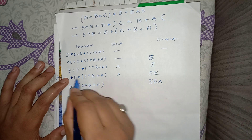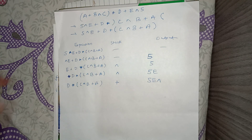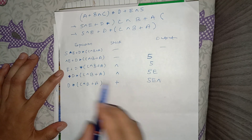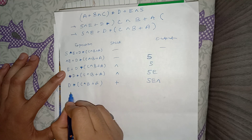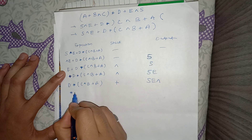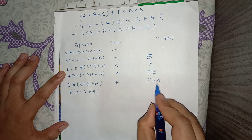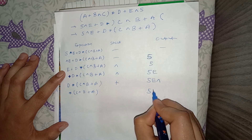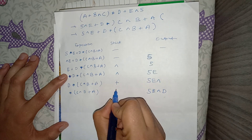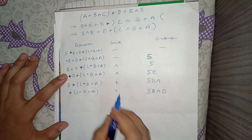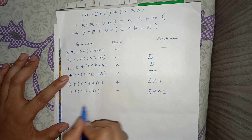The next token is D, an operand, so it goes directly to the output: 5, E, XOR, D. Plus remains in the stack. The next token is multiplication, and we check if it has higher precedence than the top element, which is plus.